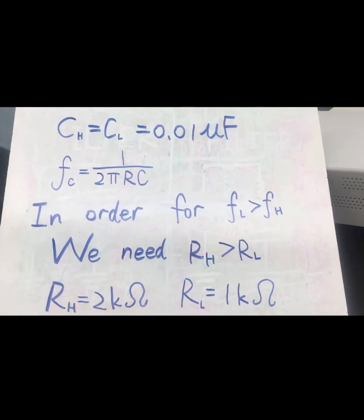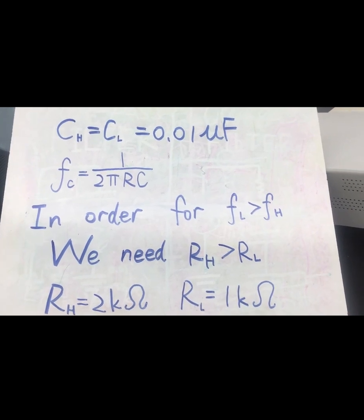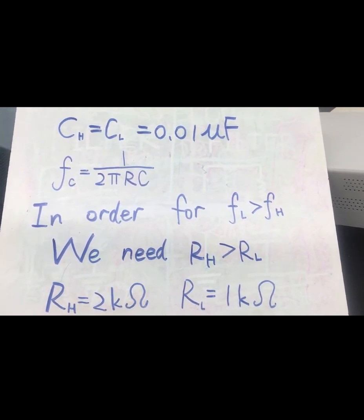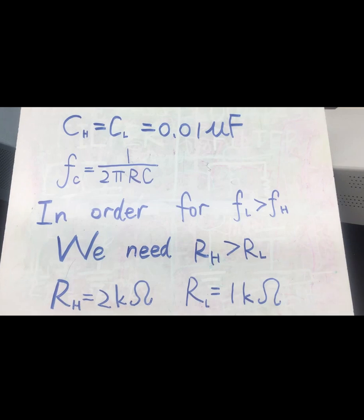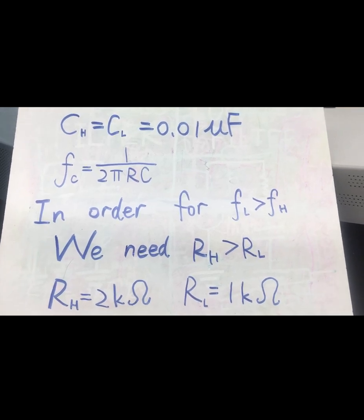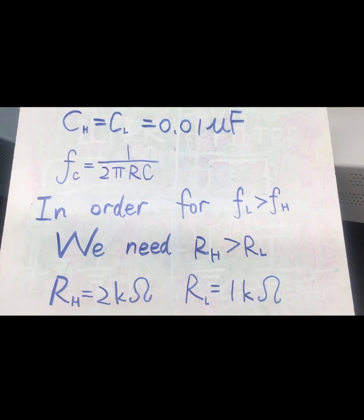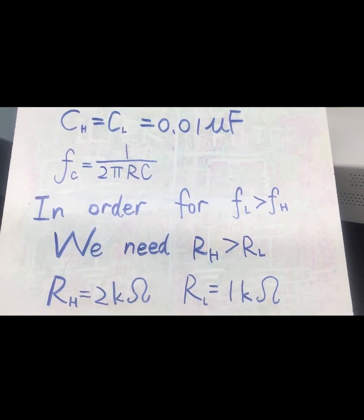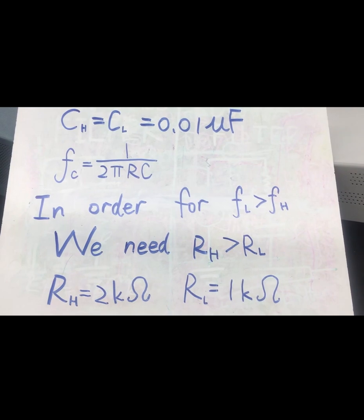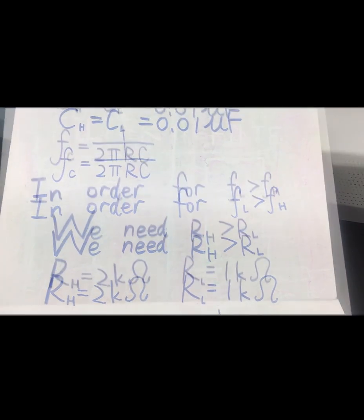After choosing two capacitors with 0.01 μF capacitance, we need a higher resistance of the resistor in high pass filter and the lower one for the low pass filter according to the equation shown. So we choose 2 kilo ohm resistor for high pass filter and 1 kilo ohm resistor for the low pass filter.